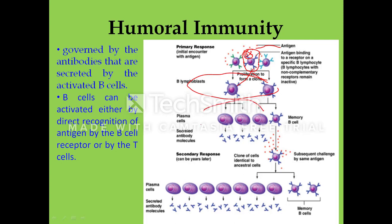After clonal expansion, in the population, some cells start secreting Y-shaped glycoproteins called antibodies or immunoglobulins. Such B lymphocytes that secrete antibodies into the blood and body fluid are called plasma cells, also referred to as effector B lymphocytes. Another group of B lymphocytes, instead of secreting antibodies, express membrane-bound antibody on their surface as receptors — these serve as memory B cells, retaining memory of the pathogen for further subsequent challenges.